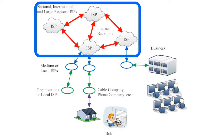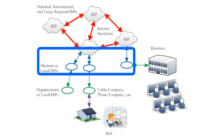The connections linking the biggest ISPs together are modeled by red arrows in this illustration. These arrows represent the network cables that carry the most information. Most internet traffic must travel through one of these backbone connections at some point as it travels across the net.